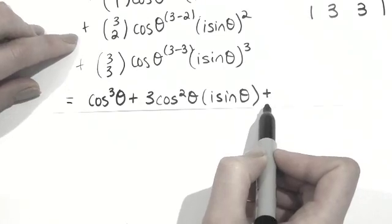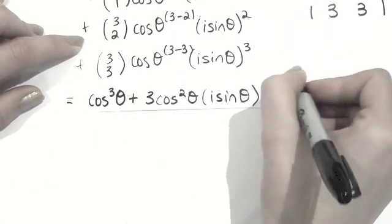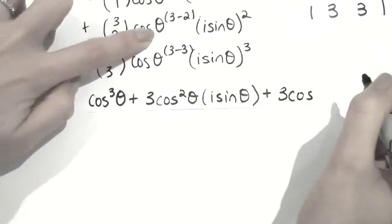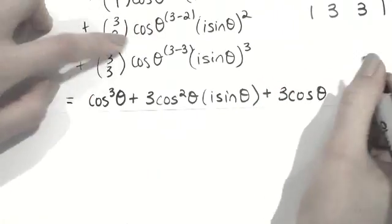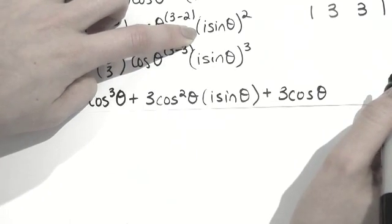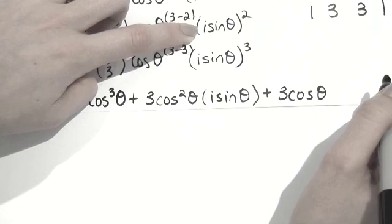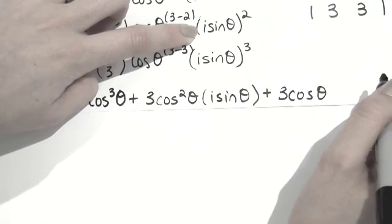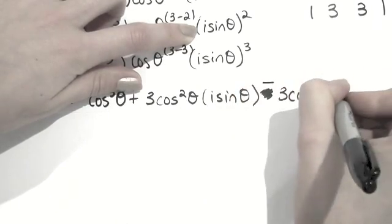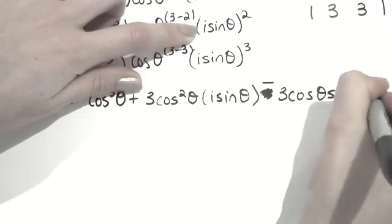Now we have our k equals 2, so again we have 3 choose 2, which is 3, cos theta because it's just to the power of 1. And then i squared, the square root of negative 1 squared is just negative 1, so it's times negative sine squared theta. So in fact this becomes a negative, and then we have sine squared theta.